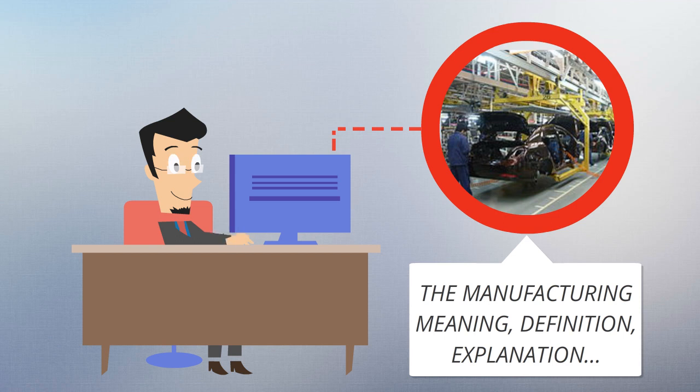These materials are then modified through manufacturing processes to become the required part. Modern manufacturing includes all intermediate processes required in the production and integration of a product's components.